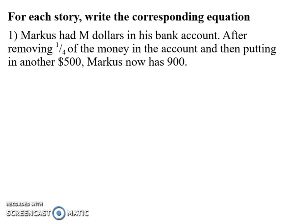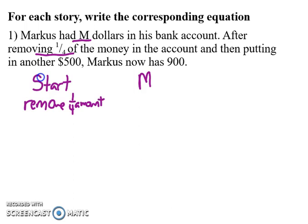The first thing I want to do, just like my expressions, is figure out where do I start. In this problem, I'm going to start at M dollars in the bank. Then it says that I'm going to remove one-fourth of that amount. So I'm going to remove one-fourth of the amount, which is the amount there was M.